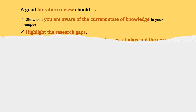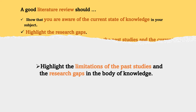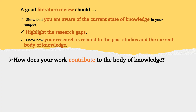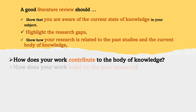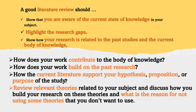A good literature review should also highlight the research gaps — clearly highlight the limitations of past studies and the gaps in the body of knowledge. What gaps do you aim to fill? This is important because it justifies the need for your research. And finally, a good literature review should show how your research is related to past studies and the current body of knowledge. This means you need to show that you are not reinventing the wheel and your work contributes to the field. You should show that your work builds on research conducted before you, demonstrate how the current literature supports your hypothesis, proposition, or purpose of the study, and review relevant theories, discussing how you build your research on them and why you choose not to use certain theories.